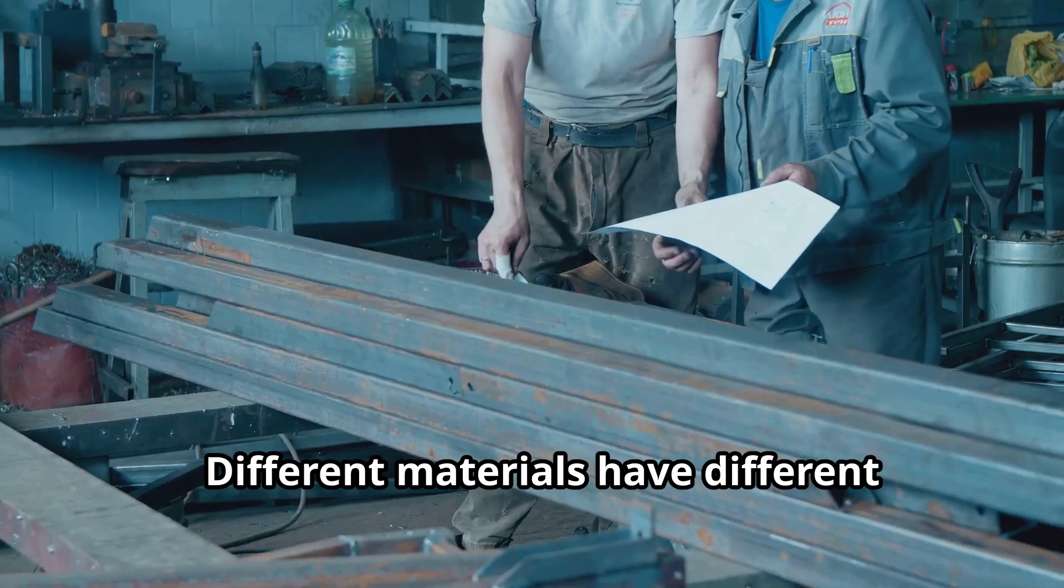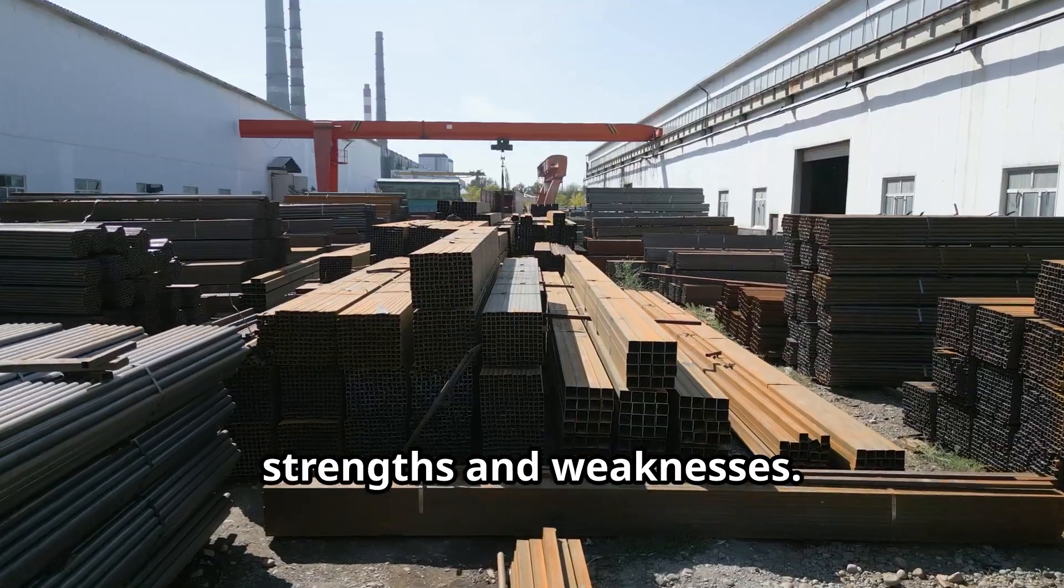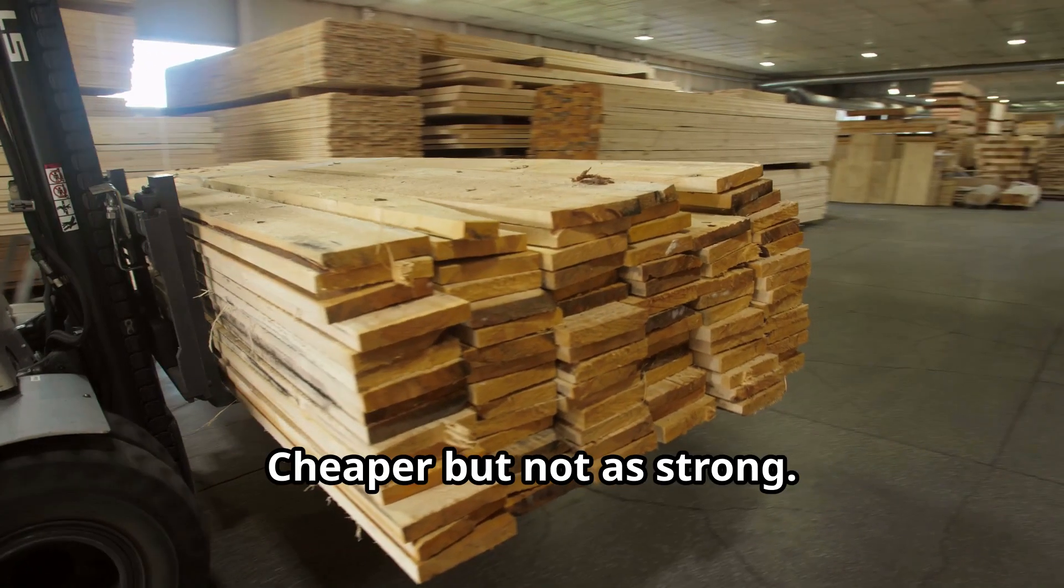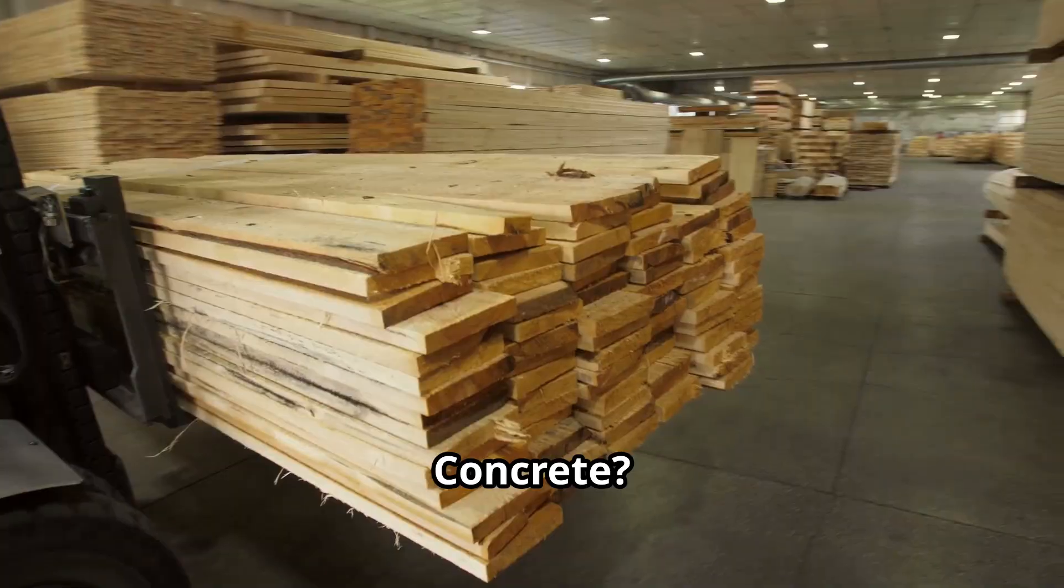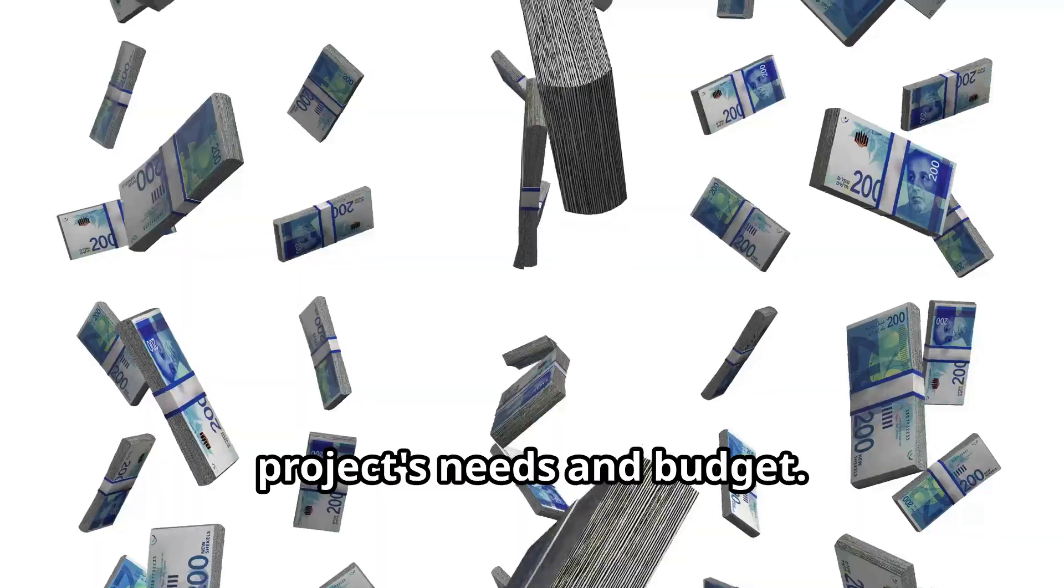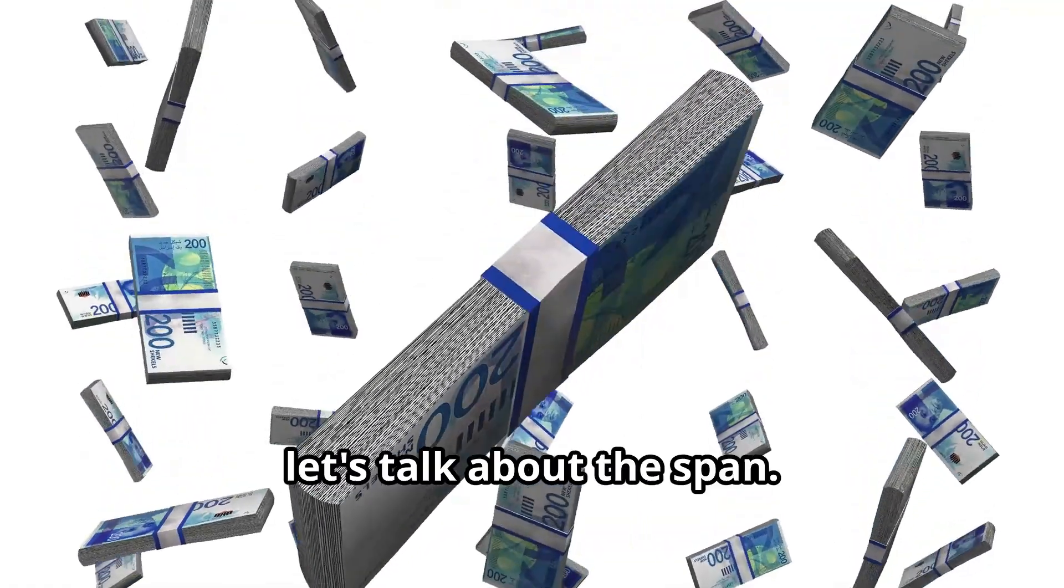Next up, the material. Different materials have different strengths and weaknesses. Steel, super strong but expensive. Wood, cheaper but not as strong. Concrete, great for compression but not so much for tension. Choose your material based on your project's needs and budget. Now let's talk about the span.